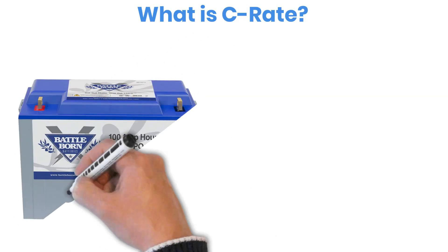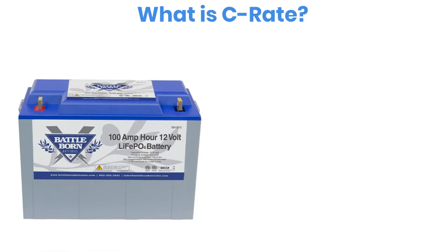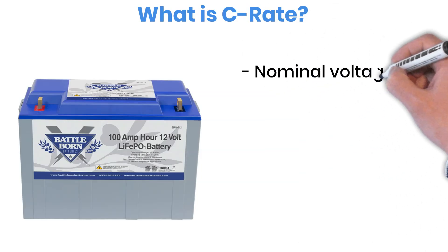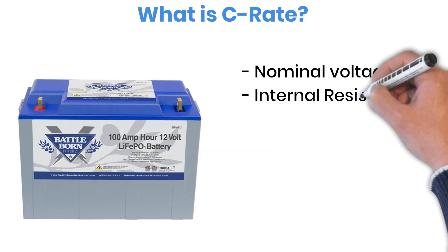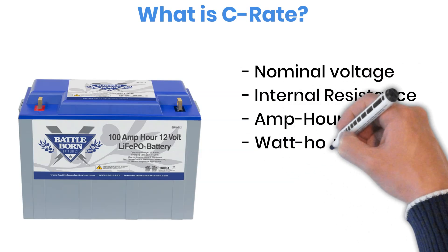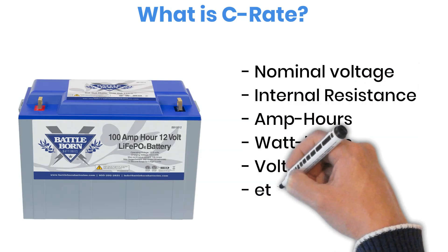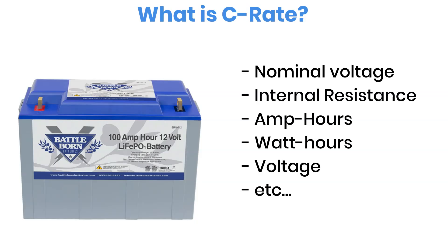Whenever you look at a battery's specifications, you'll see a whole list of ratings like nominal voltage, internal resistance, ampere hours, watt hours, and many others. Among these, there's one more term a lot of people overlook: C-rate.